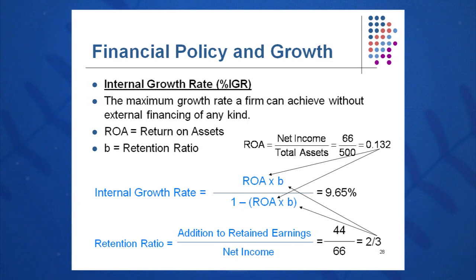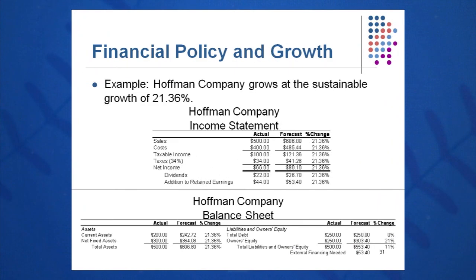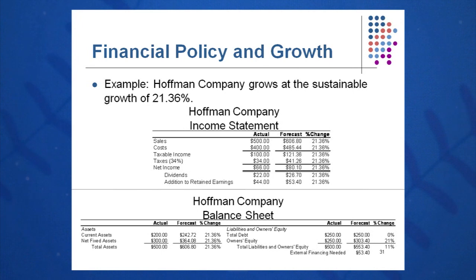I'll calculate return on assets as net income divided by assets, times B, which is additions to retained earnings divided by total net income, all divided by one minus that same numerator. Let's take a look at it for Huffman Company using year one only. I'll take net income of 66 divided by total assets of 500, giving me a return on assets of 13.2%. B we know will be two-thirds: 44 over 66, since we keep two-thirds of net income.